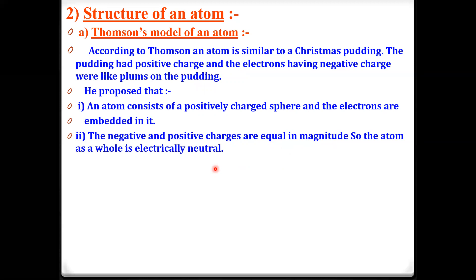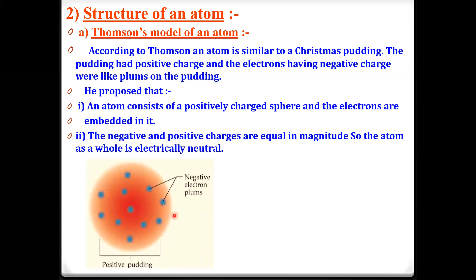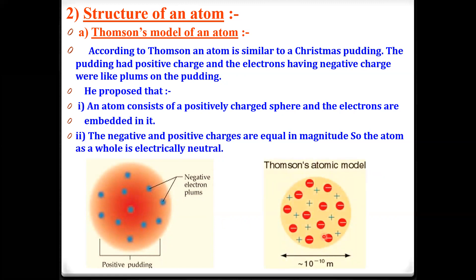Equal in magnitude means an atom has the same number of protons and electrons. For example, if an atom has 10 protons, it also has 10 electrons. Taking helium as an example: its atomic number is 2, so it has 2 protons and 2 electrons, making it electrically neutral. This is what Thomson's atomic model — also called the Plum-Pudding model — looks like, with the positive sphere and electrons embedded in it, comparable to a watermelon with seeds.